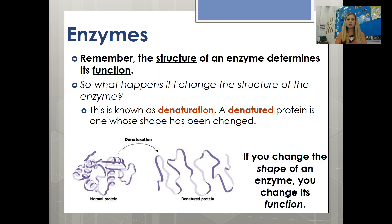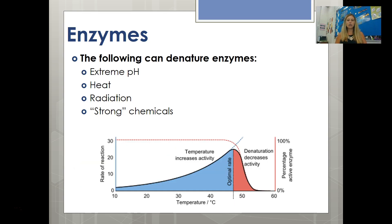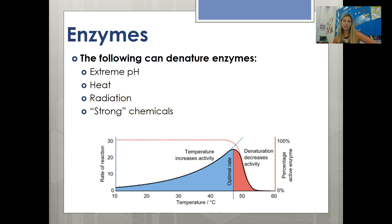The structure of an enzyme determines its function — so what happens if you change the structure of an enzyme? This is known as denaturation. A denatured protein or enzyme is one whose shape has been changed. If you change the shape of the enzyme, you change its function. Ways that you can denature enzymes include extreme pH (acids or bases), heat such as cooking, radiation, and strong chemicals like chloroform. This graph shows that an enzyme works best at a specific temperature — if you make it too hot or too cold, you denature the enzyme and change its shape, meaning it can no longer function.